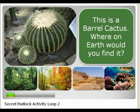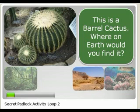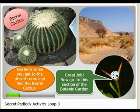The first one they're focusing on is the barrel cactus. They have to first figure out where the barrel cactus is within the botanic garden by choosing which biome from options below. If they choose incorrectly, it falls off. If they choose correctly, they're congratulated and know they have to go to the desert room to find the barrel cactus.